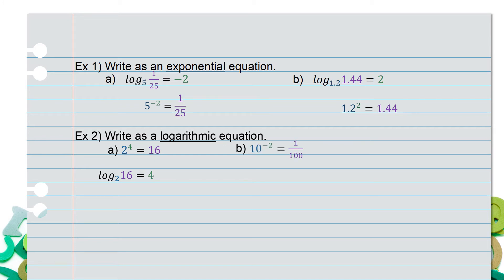For part b, we have 10 raised to the power of negative 2 equals 1/100. Write this as a log equation. So we keep log, the base is 10, gives me a result of 1/100, equals the exponent, which was negative 2.